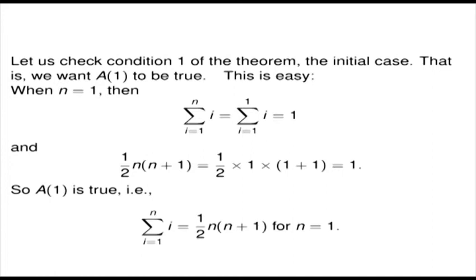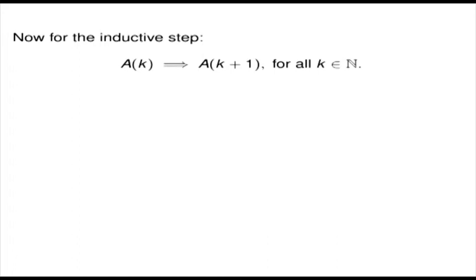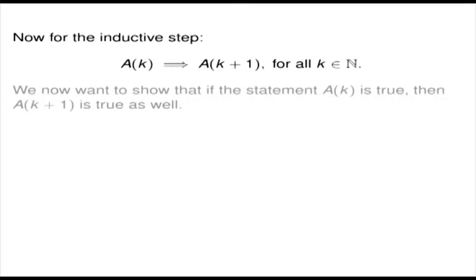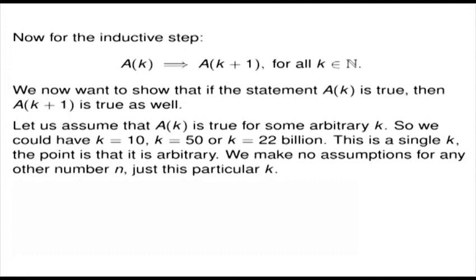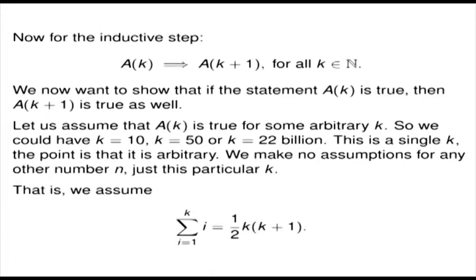Now we need to do the inductive step: A(k) implies A(k+1). We want to show that if the statement A(k) is true, then A(k+1) is true. So let's assume that A(k) is true for some arbitrary k — it could be k equals 10, k equals 50, or k equals 22 billion. This is a single k; it's arbitrary. We make no assumptions for any other n, just this particular k. So we're assuming that the sum from i equals 1 to k is equal to one half of k times k plus 1.